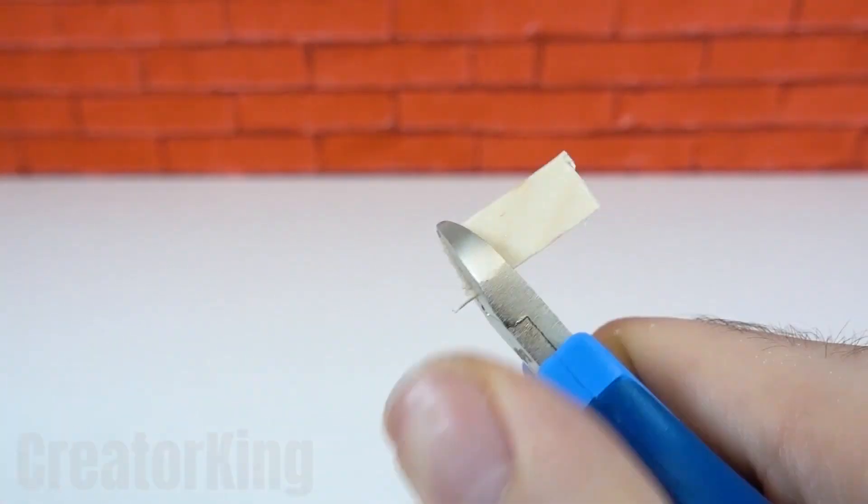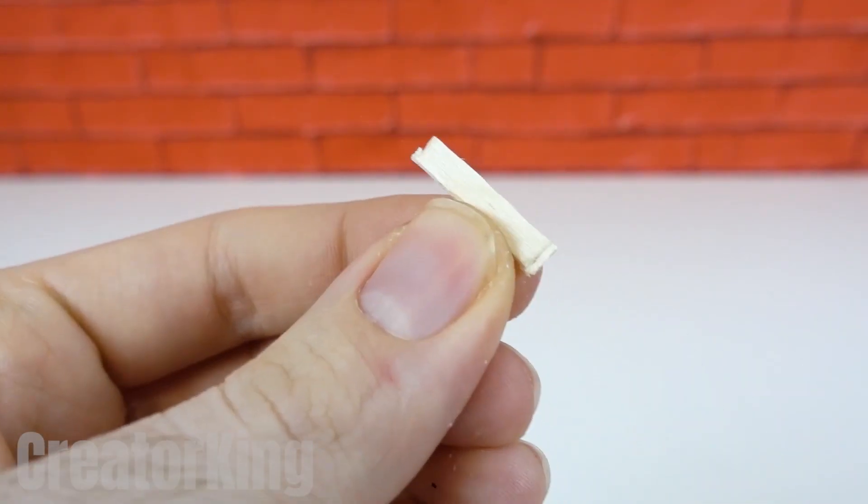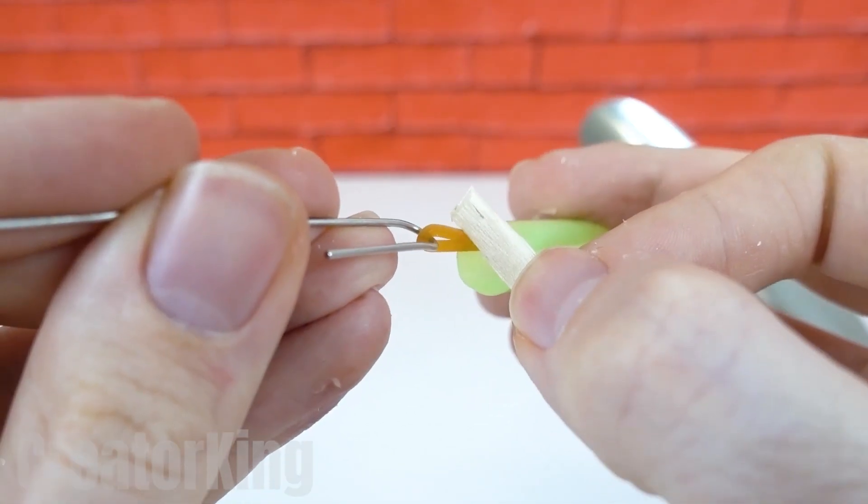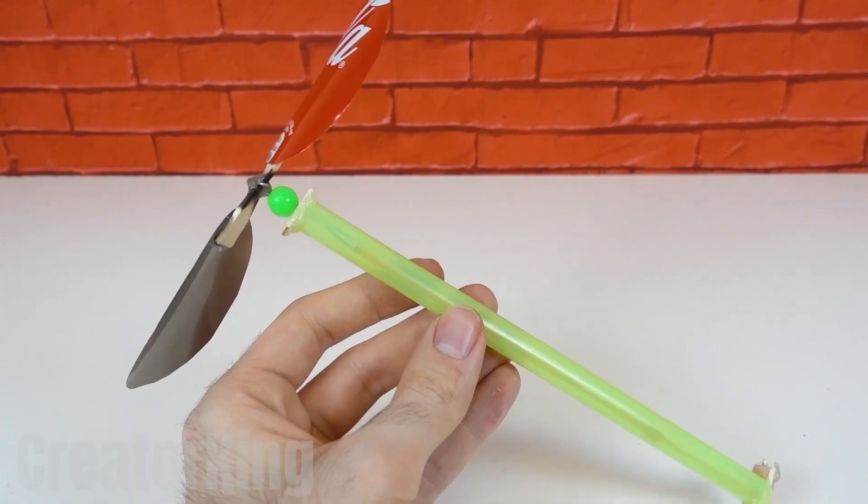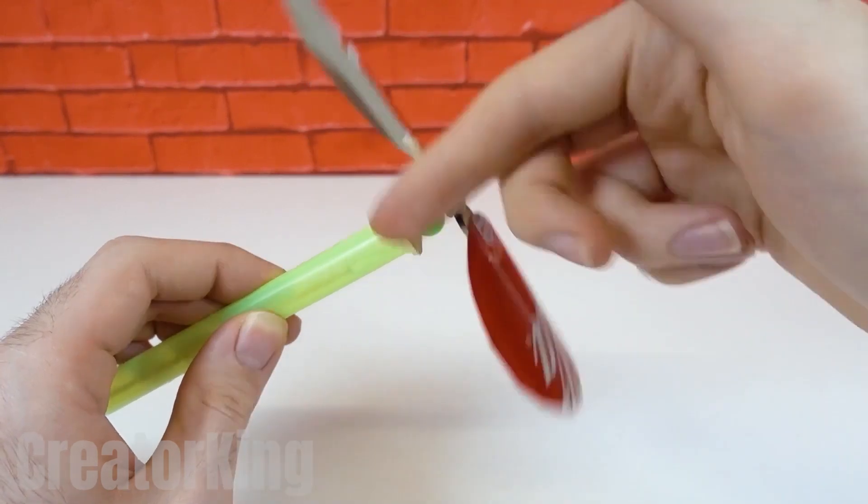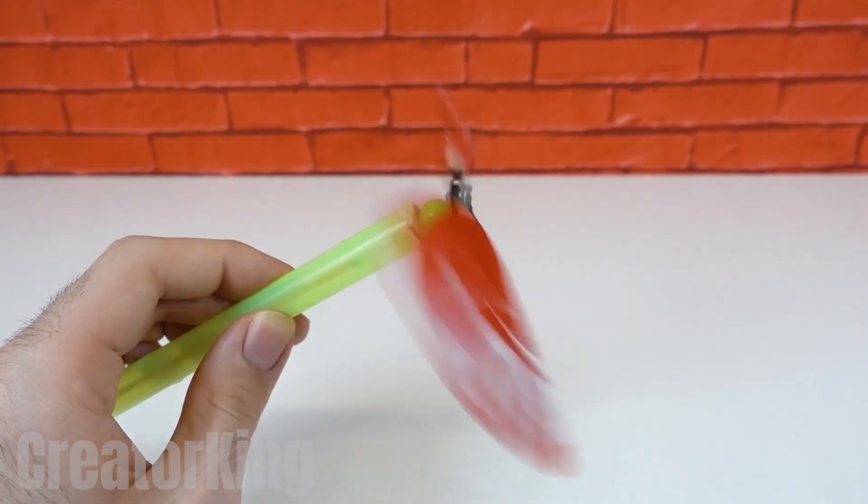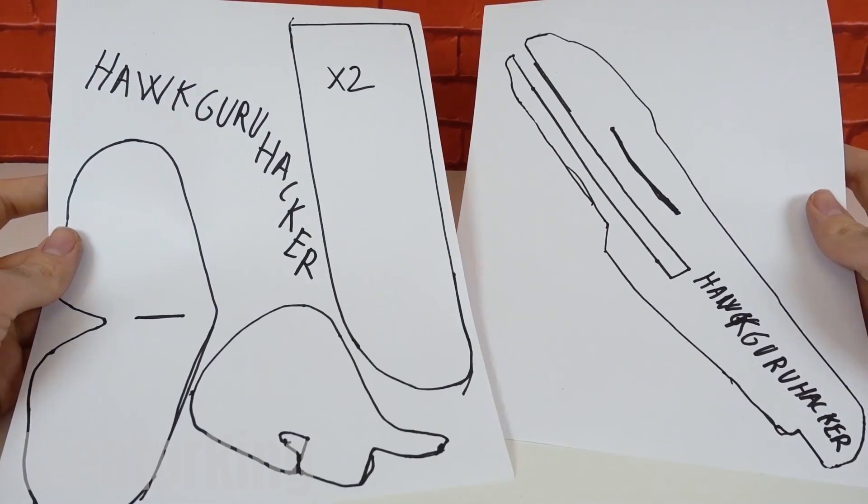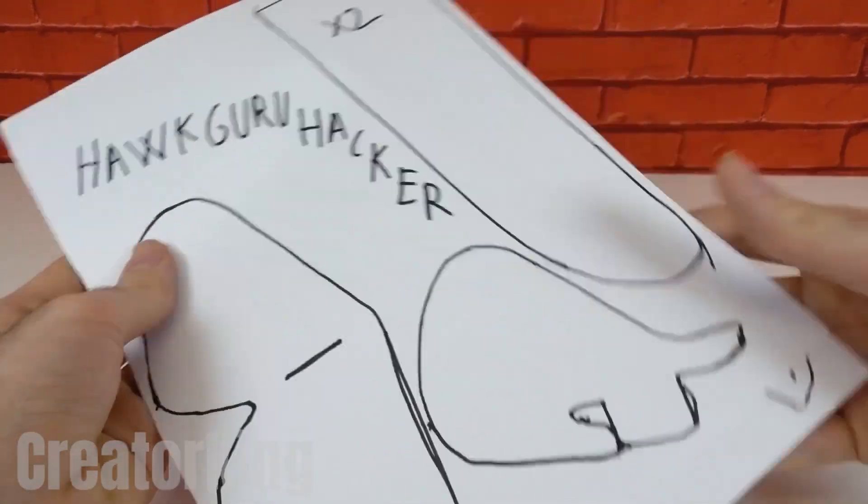With pliers, cut a piece of popsicle stick and then cut it even more. We'll need two pieces. With that, we'll have the finished rotation system for the propeller. But the rest of the structure is missing, which we'll make with these beautiful designs that I've drawn for you.